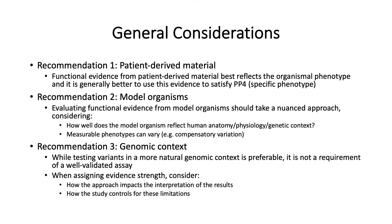Recommendation 3 suggests that the genomic context of the variant should also be considered. Testing variants in a more natural genomic context, such as the integration of the variant into the genome rather than expressing from a cDNA construct, may be preferred, but this is not a requirement of a well-validated assay. Overall, when deciding the strength of evidence, it's important to consider how the experimental approach impacts the interpretation of the results, and how the study has controlled for these limitations.